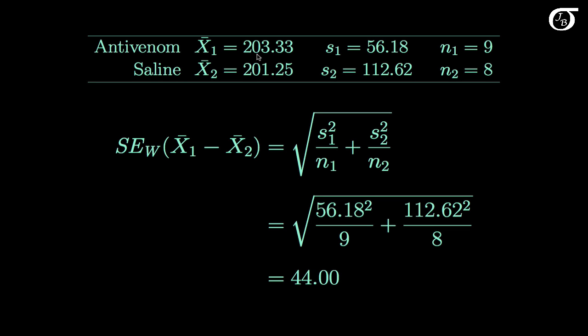The antivenom group has a sample mean of 203.33, and the saline group has a sample mean of 201.25. And we can see over here that the sample standard deviation of the saline group is about double the sample standard deviation of the antivenom group, and we saw that difference in variability in the box plots.